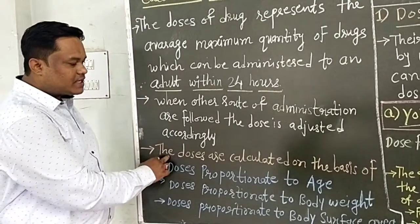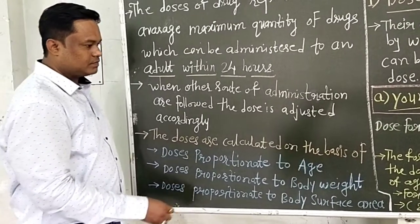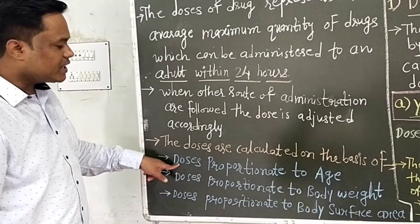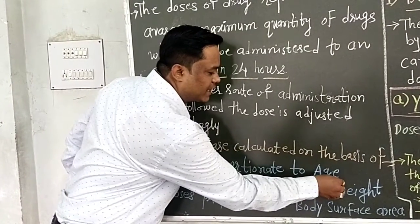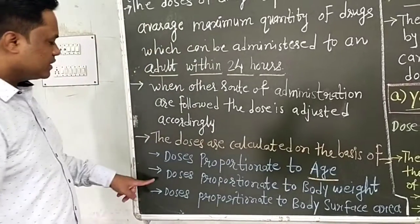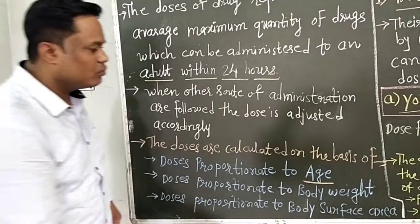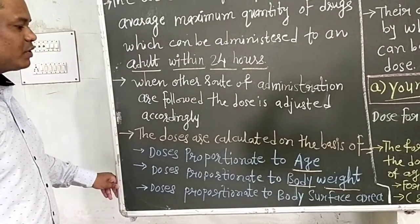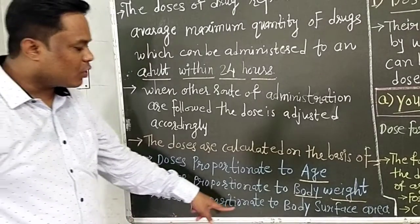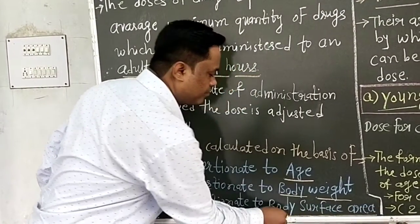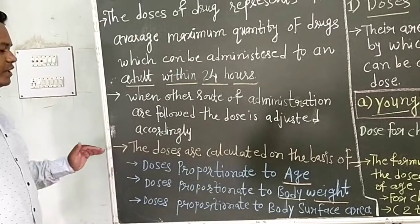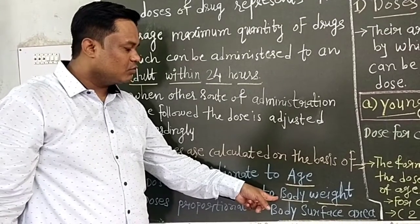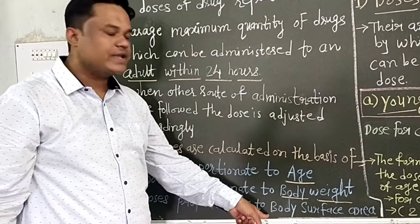Doses are calculated on three bases: first, doses proportionate to age; second, doses proportionate to body weight; and third, doses proportionate to body surface area.